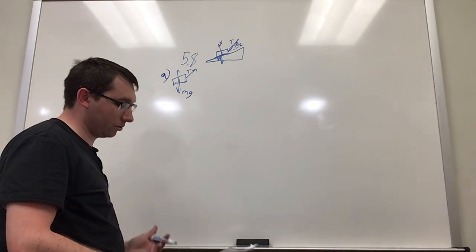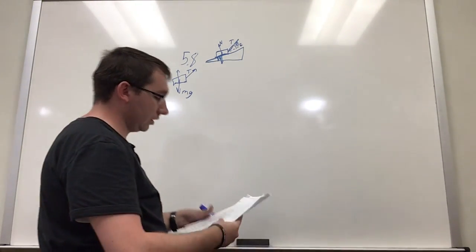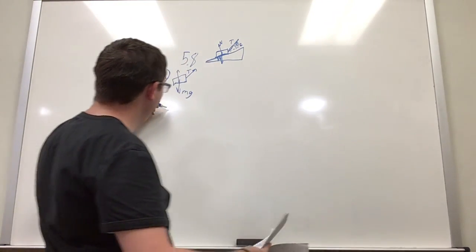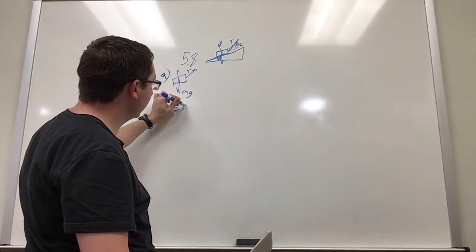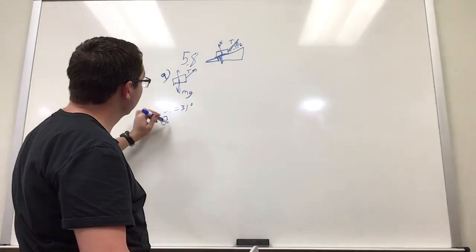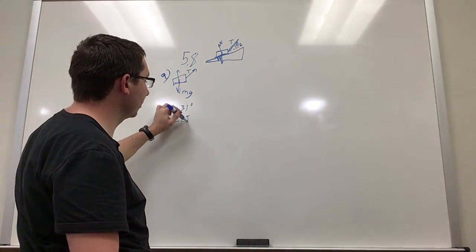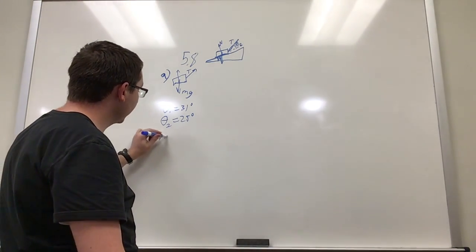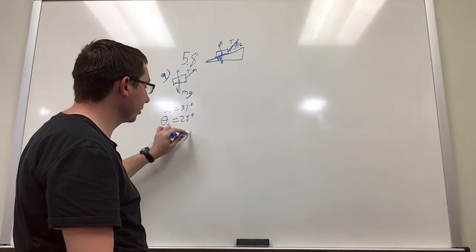For part B, it wants us to find the tension in the cable, and the problem gives us a couple of things. So we know that the first angle is equal to 31 degrees, the second angle, the angle of the ramp is 25 degrees, and we know that the mass of the car is 1,130 kilograms.